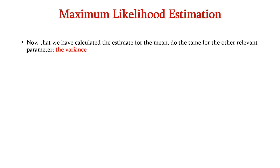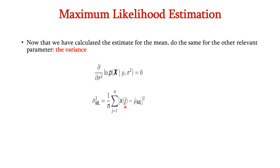Now that we have estimated the mean, we can do the same for the variance. Once we have the mean, it is easy to calculate the variance, because variance is the sum of squared differences between the observed data and the mean. The variance for maximum likelihood is: sigma^2_ML = (1/n) * sum((x_j - mu_ML)^2).